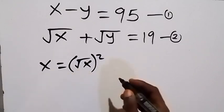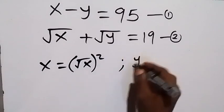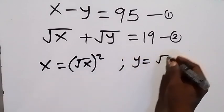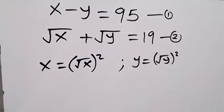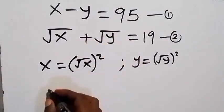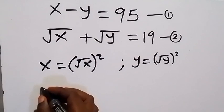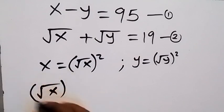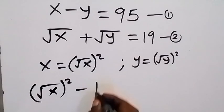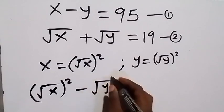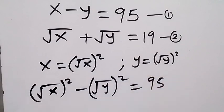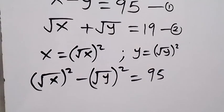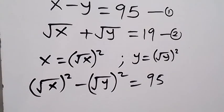Similarly, y can be written as root y squared. Therefore, we can write equation one again in that format: root x squared minus root y squared equals 95. So we have written equation one again in terms of root x and root y.